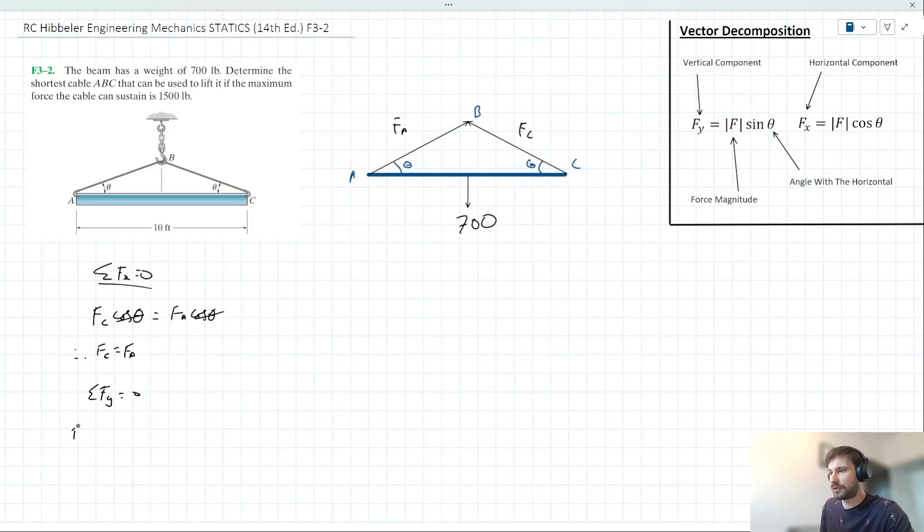What do we have acting up? Well, we've got the vertical components of FA and FC here. We know that they are equal to each other, so we could describe this as 2FA sin theta.